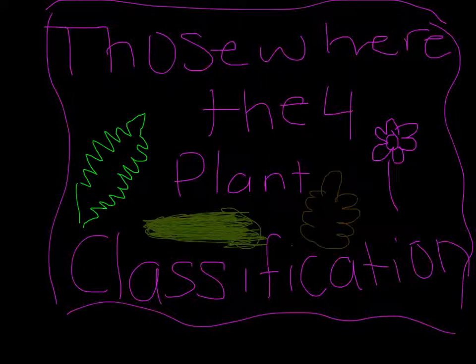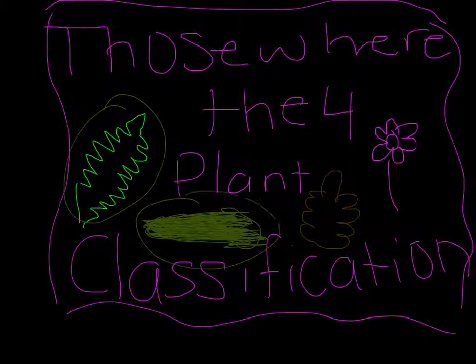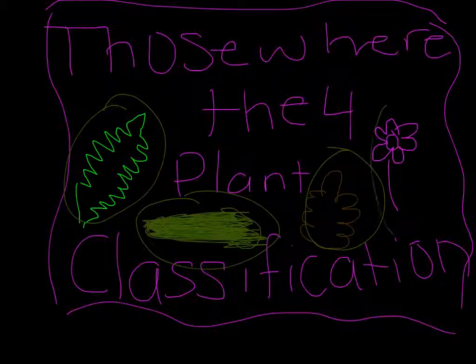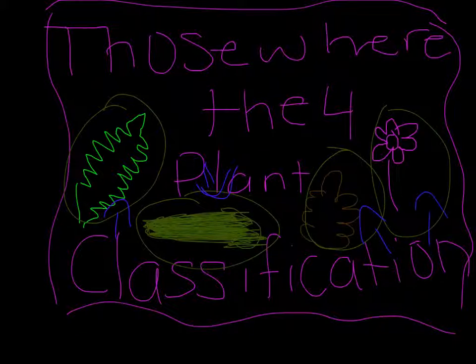Those were the four plant classifications: ferns, moss, pine cones, and flowers — or Pteridophytes, Gymnosperms, and Angiosperms. Thank you for listening. See ya!